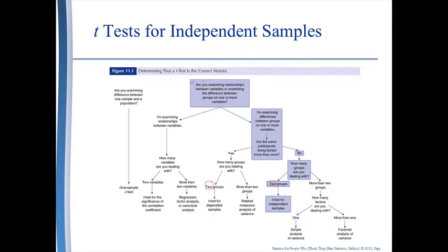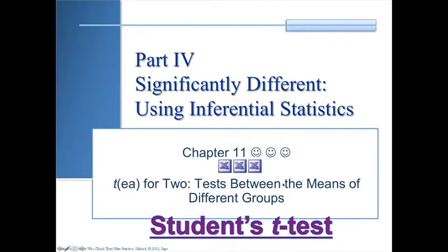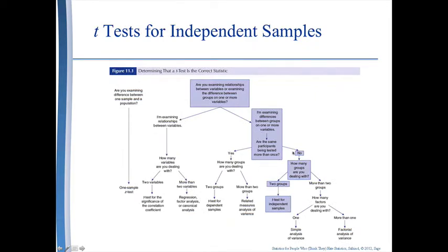Here is our decision-making tree. Are we examining relationships between variables, or examining differences between groups on one or more variables? In t-tests we're looking at different groups. Then we ask: are the participants being tested more than once? In the independent samples t-test the answer is no. If we have two groups, we do our t-test for independent samples; if more than two groups, we have other tests to learn about later.